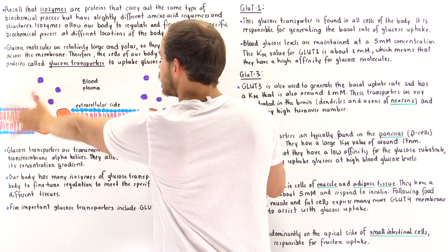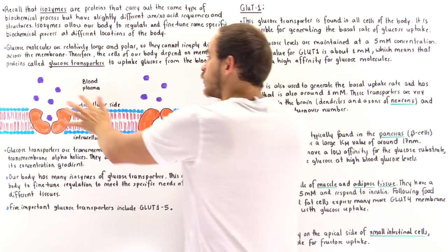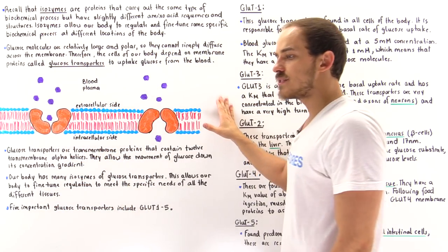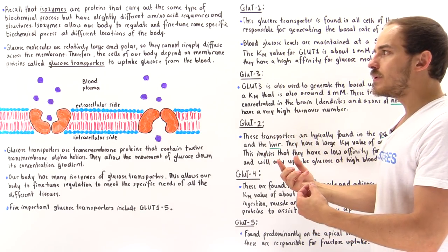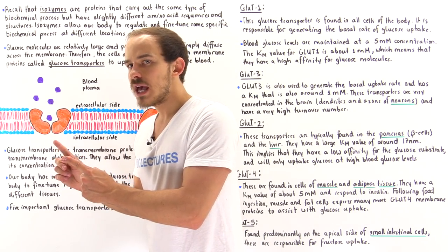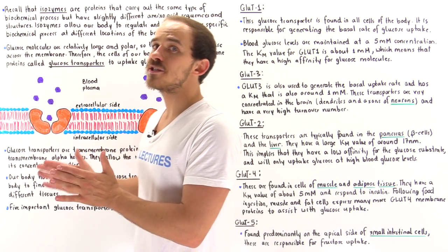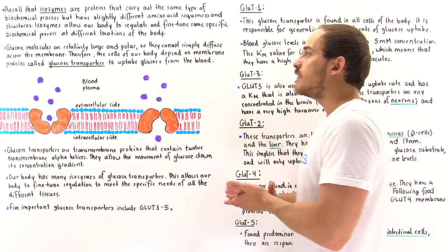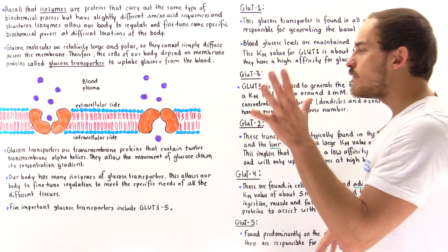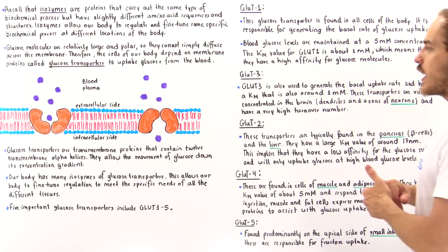If we have a high concentration of glucose in the blood plasma and a low amount inside the cell, the glucose will move down its concentration gradient from the outside to the inside. To fine-tune the regulation of this process, our body depends on different types of isozymes of glucose transporters. In fact, we have over 10 different isozymes of glucose transporters, and in this lecture we're going to focus on the first five — perhaps the most important of these glucose transporter molecules.